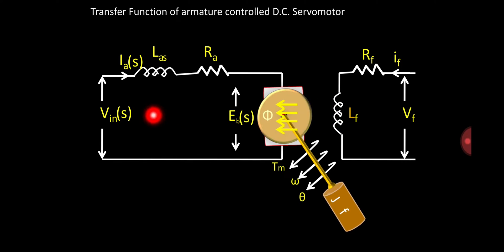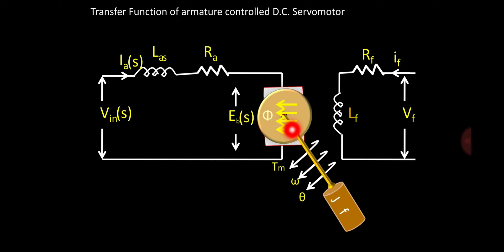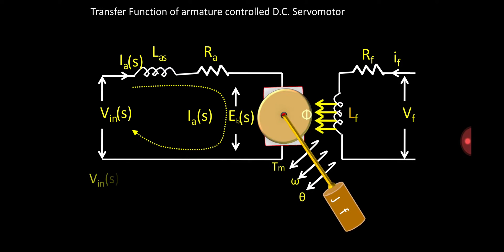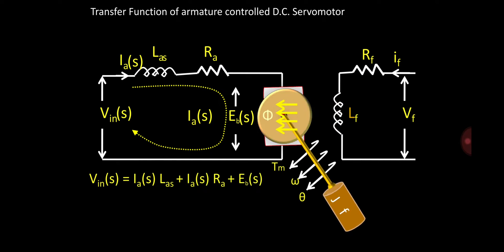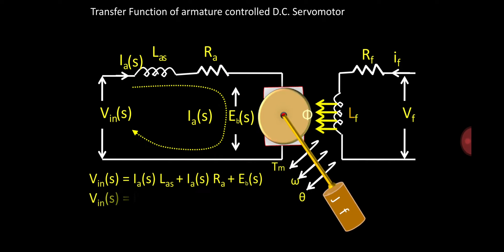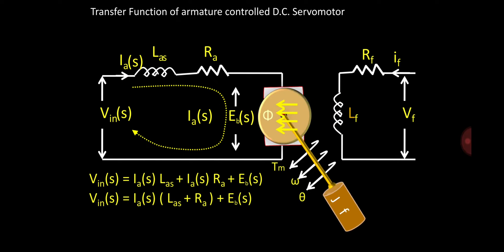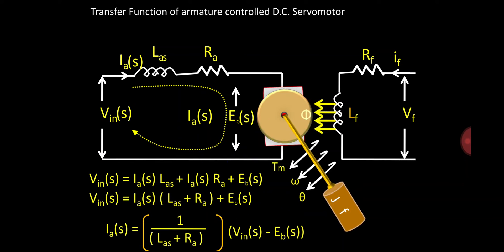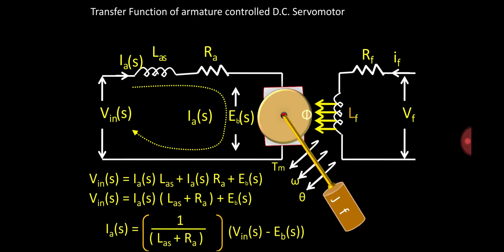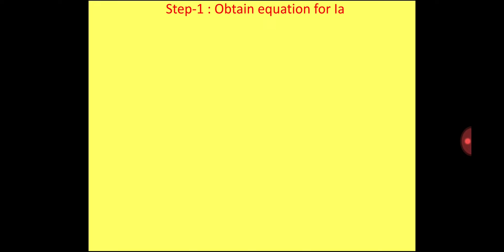To get the equation for IA(S) in step one, we apply Kirchhoff's voltage law in the armature loop. After applying KVL: VIN(S) = IA(S)·(LAS) + IA(S)·RA + EB(S). Taking IA(S) common: VIN(S) = IA(S)·(LAS + RA) + EB(S). Finally, the equation for IA(S) is: IA(S) = [VIN(S) − EB(S)] / (LAS + RA).